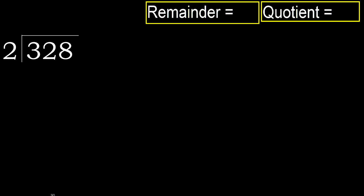328 divided by 2. 3 is not less, therefore work with 3. 2 multiplied by which number is nearest to 3 but not greater? 2 multiplied by 2 is 4, and 4 is greater. Multiply by 1 is 2, which is not greater. So 3 minus 2 is 1.